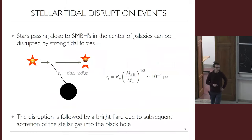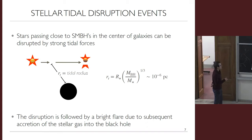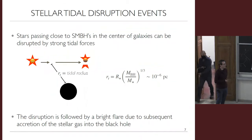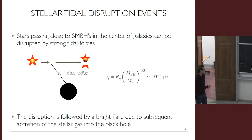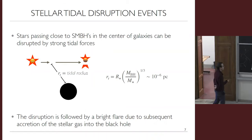Stellar TDEs are the destruction of stars near supermassive black holes in the center of galaxies. Stars need to pass within a tidal radius to be disrupted. The tidal radius can be calculated in Newtonian physics and depends on the radius of the star, the mass of the black hole, and the mass of the star. For supermassive black holes of order 10^6 solar masses and typical main sequence stars, the tidal radius is roughly 10^-6 parsecs — about 20 times the horizon radius — confirming that stellar TDEs happen very close to the horizon.